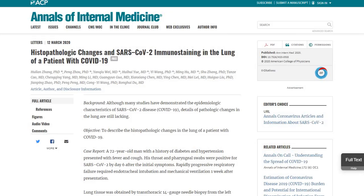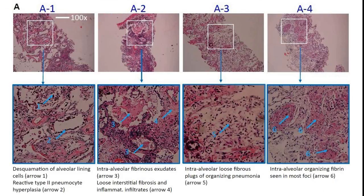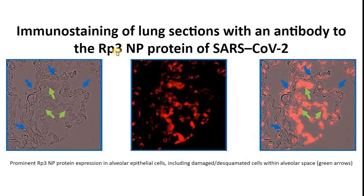The second case report is essentially similar. It's for a 72-year-old man who presented with fever and cough, with evidence of pneumonia on CT scan, and he tested positive for SARS-CoV-2 on throat swab on day 6 after initial symptoms. Similarly, on histopathologic examination of lung biopsy tissues, we can see diffuse alveolar damage with desquamation of alveolar epithelial cells and some reactive type 2 pneumocytes. There is intra-alveolar fibrinous exudate, loose interstitial fibrosis, and inflammatory cell infiltration, as well as intra-alveolar organizing and polymerized fibrin. Using immunostaining with an antibody against the NP protein of the virus, many of the desquamated alveolar epithelial cells are positive for the viral antigen.